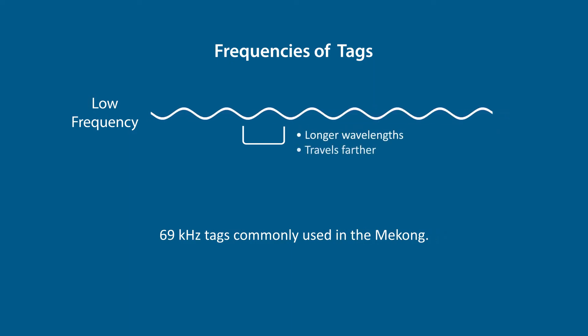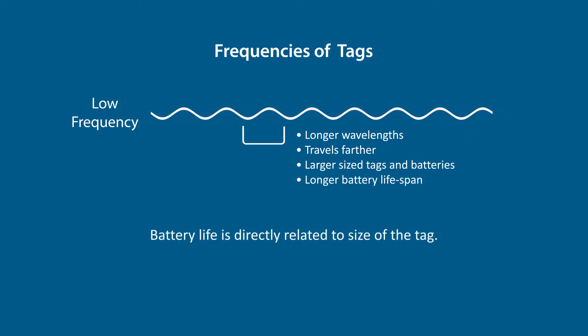The 69 kilohertz tags are best for tracking long-scale fish movements due to their larger size, which means they have a longer battery life, allowing them to be picked up by receivers that are farther away. This is beneficial in a large area such as the Mekong River, meaning you can have more spread-out receivers that can detect fish from distances of nearly a kilometer away.